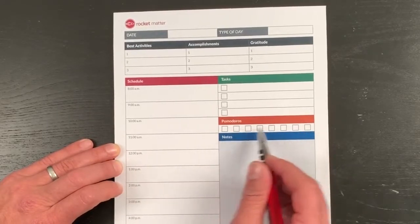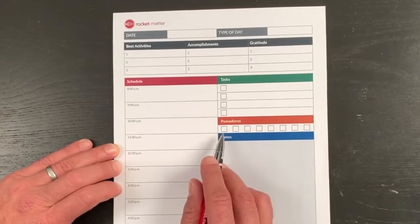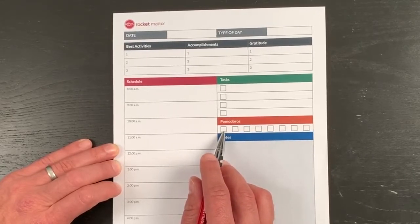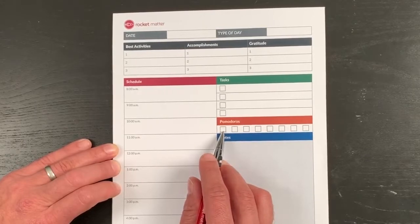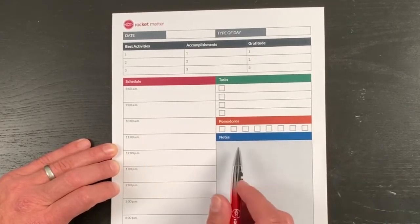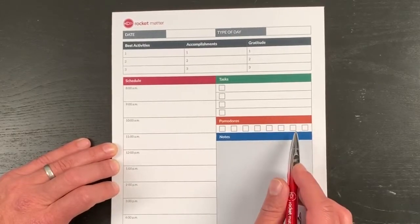Then, the last two sections, the first one is Pomodoro. If I complete one Pomodoro, which is 25 minutes of uninterrupted, single-task work, then I get to check one of these off. I only have eight here because I've never gotten more than seven.